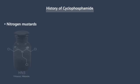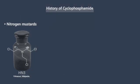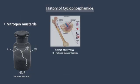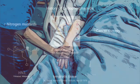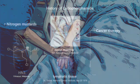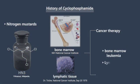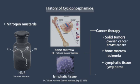Cyclophosphamide is a nitrogen mustard. It was produced as a potential chemical warfare weapon. Its destructive impact on bone marrow and lymphatic tissue was noted. Now it is used for the treatment of cancer, including leukemia, lymphoma, and breast cancer. It also works as an immunosuppressive agent for the treatment of autoimmune or immune-mediated diseases.